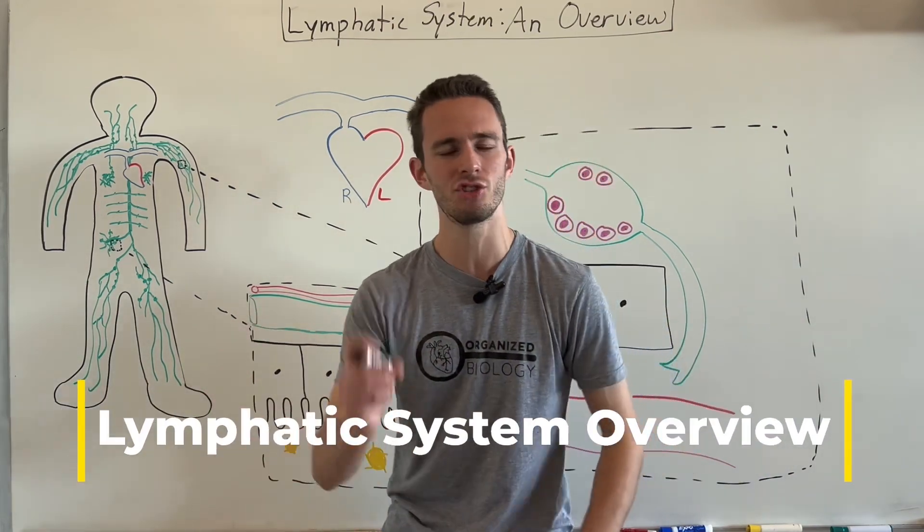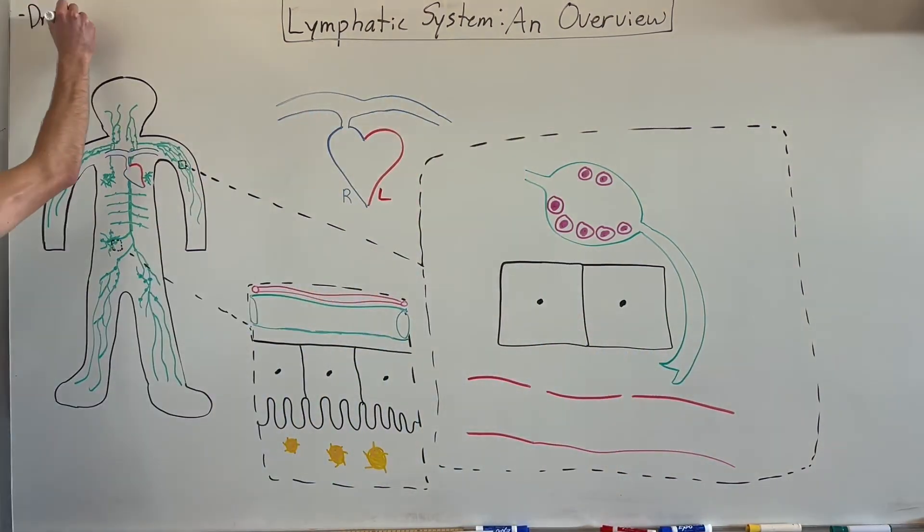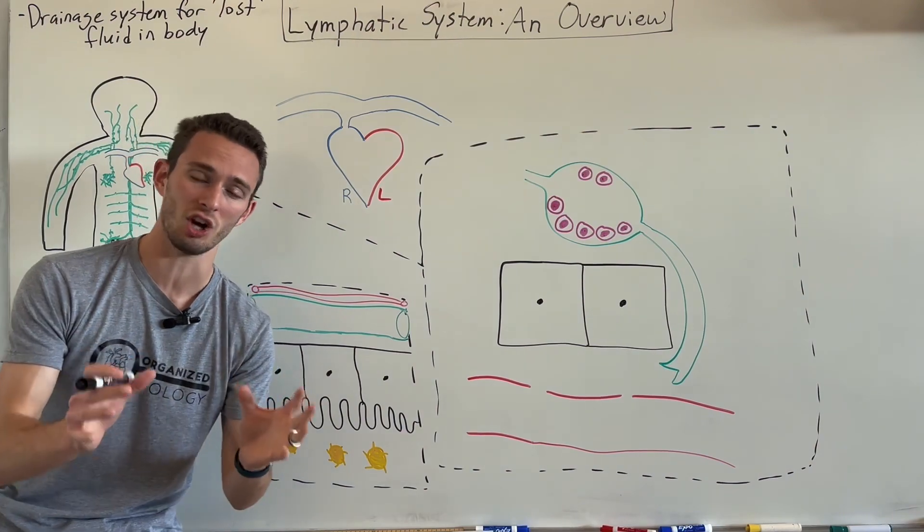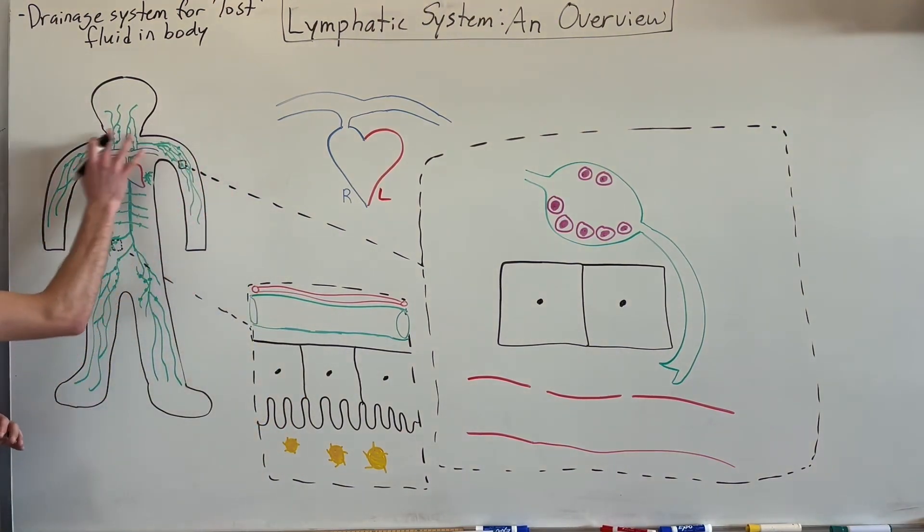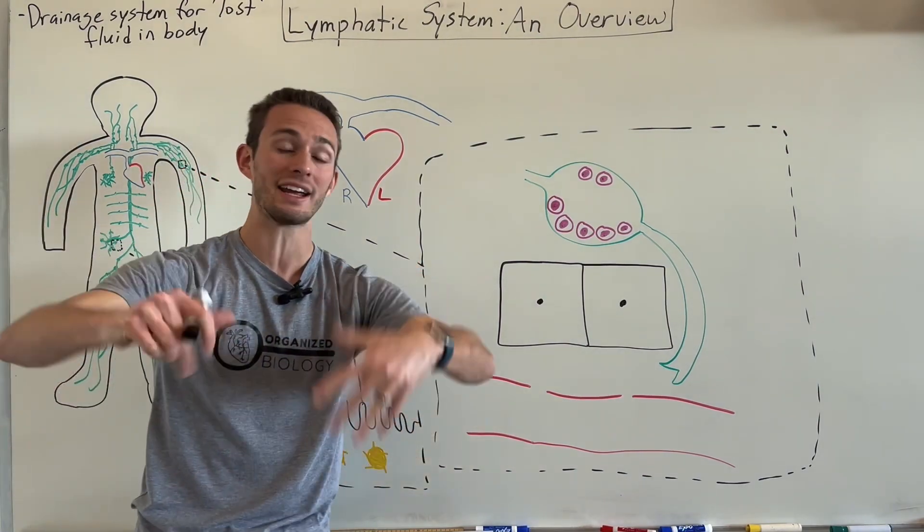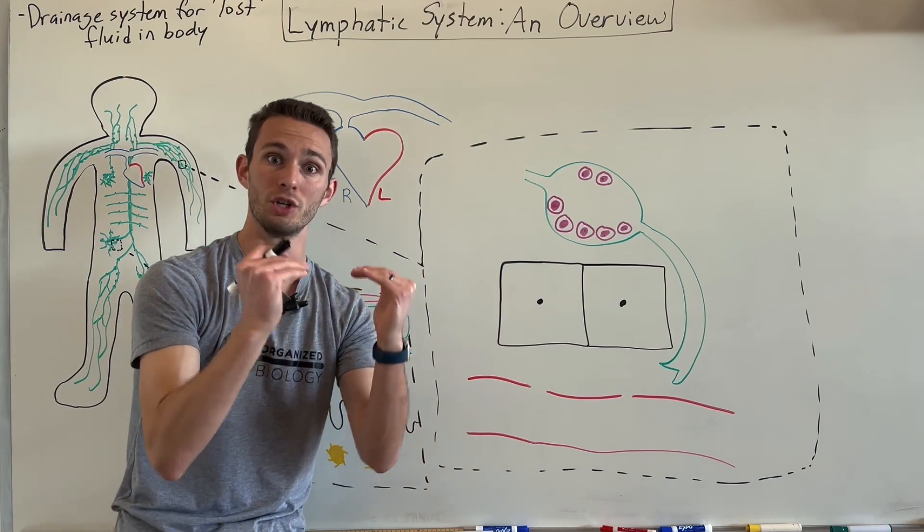Now, the lymphatic system, simply put, is just a drainage system for lost fluid in your body. And no, I'm not talking about sweat or urination. I'm actually talking about fluid lost at the tissues of the body, all throughout your body. And we need a way to bring that fluid back into our circulation, into our blood supply, so that we can keep our blood volume up.